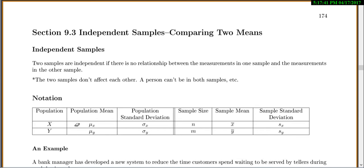We do have specific notation for two samples. We assume they're coming from two different populations, X and Y. Each population has a mean mu and standard deviations. But we don't actually know the population means and standard deviations usually — we take a sample. So we have sample sizes N and M, sample means X-bar and Y-bar, and standard deviations S-sub-x and S-sub-y, just to tell the two populations apart.